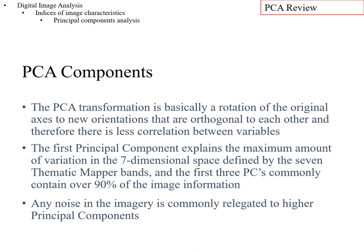To review: the PCA transformation is basically a rotation of the original axes to new orientations that are perpendicular (orthogonal) to each other, and therefore have zero correlation between the new principal components. The first principal component explains the maximum amount of variation in the seven-dimensional space defined by the seven thematic mapper bands. The first three principal components commonly contain over 90% of the image information. Any noise in the imagery is commonly relegated to higher principal components, giving you a cleaner image in the first few components.